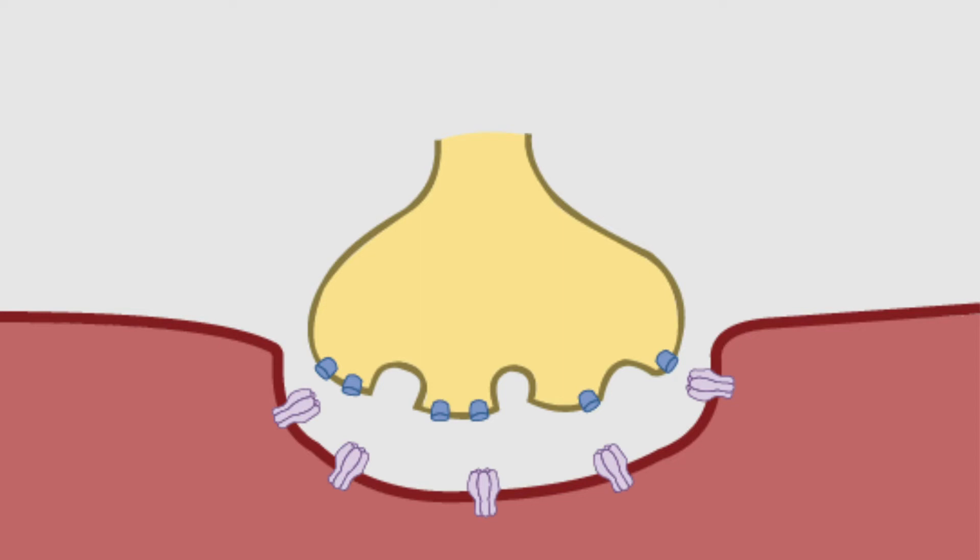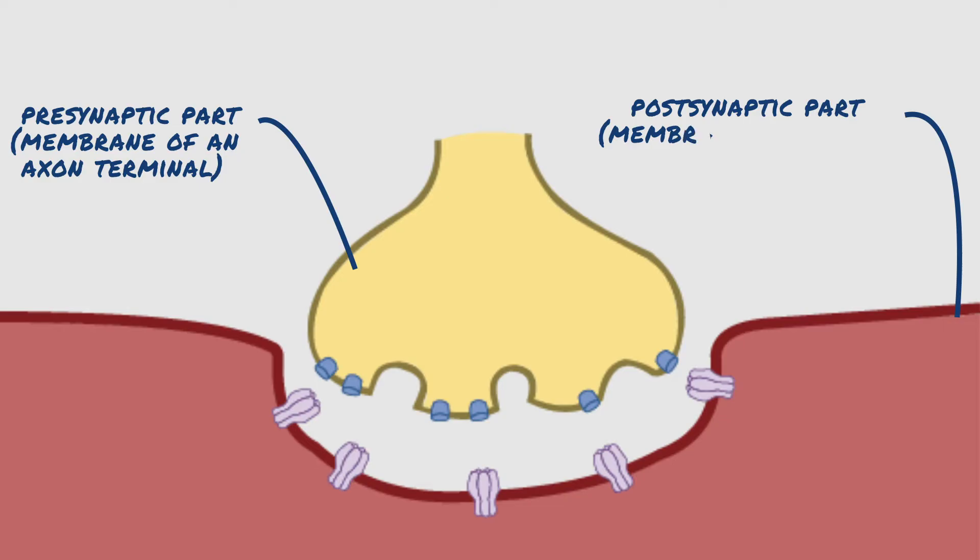The neuromuscular junction can be divided into three main parts: a presynaptic part which is the membrane of an axon terminal, the postsynaptic part which is the membrane of a skeletal muscle fiber and is also called a motor end plate, and an area between the nerve terminal and motor end plate which is called synaptic cleft.